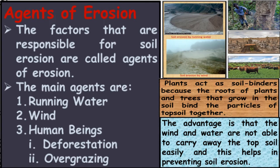Agents of Erosion. The factors that are responsible for soil erosion are called agents of erosion. The main agents are running water, wind, human beings, deforestation, and overgrazing. Plants act as soil binders because the roots of plants and trees that grow in the soil bind the particles of topsoil together. This means wind and water are not able to carry away the topsoil easily, helping prevent soil erosion.